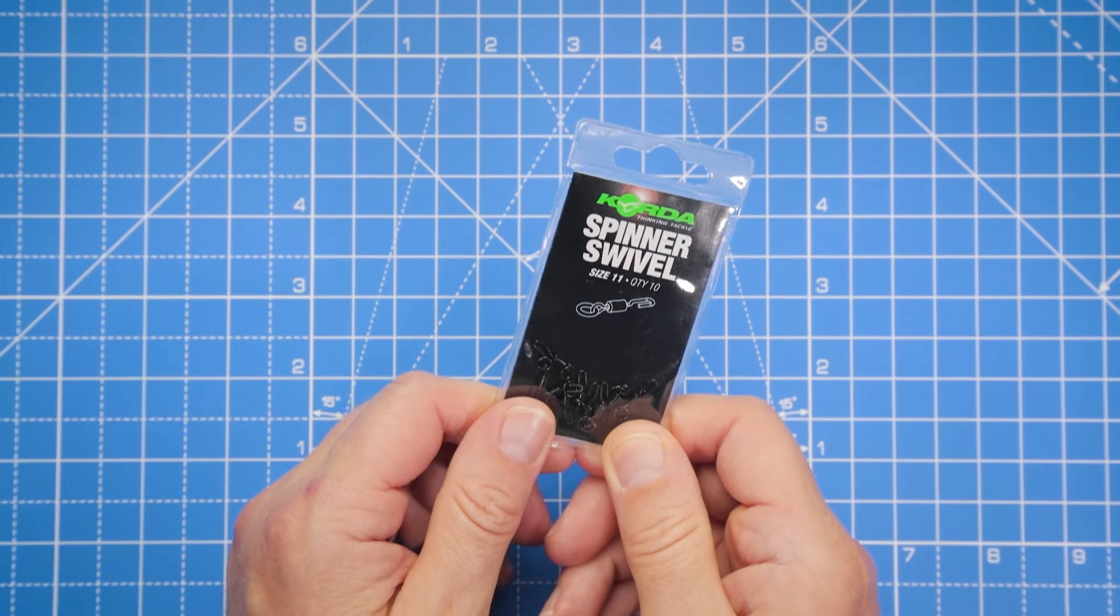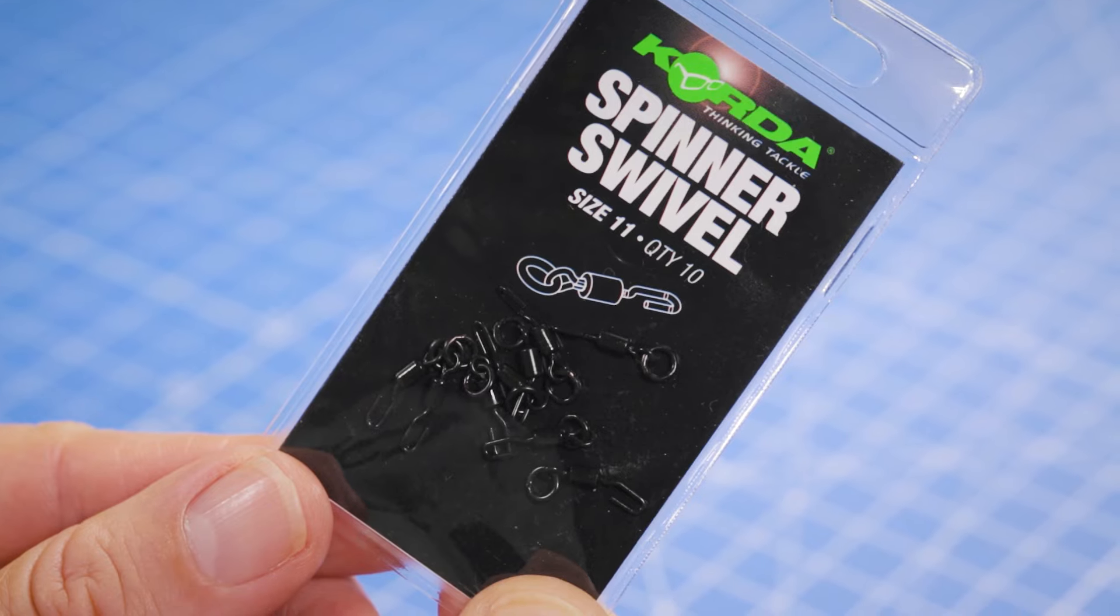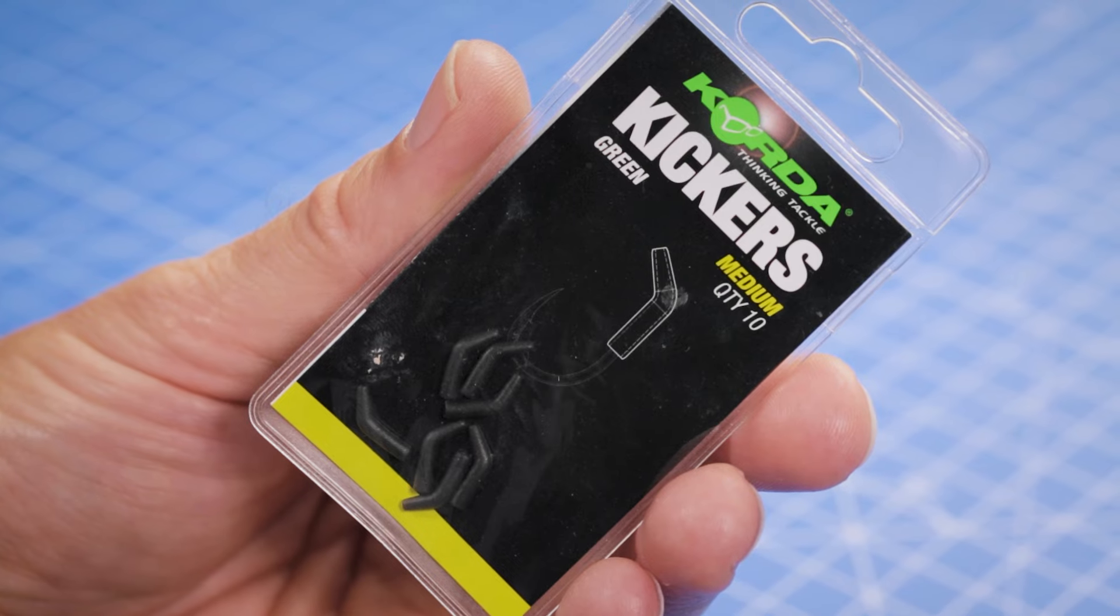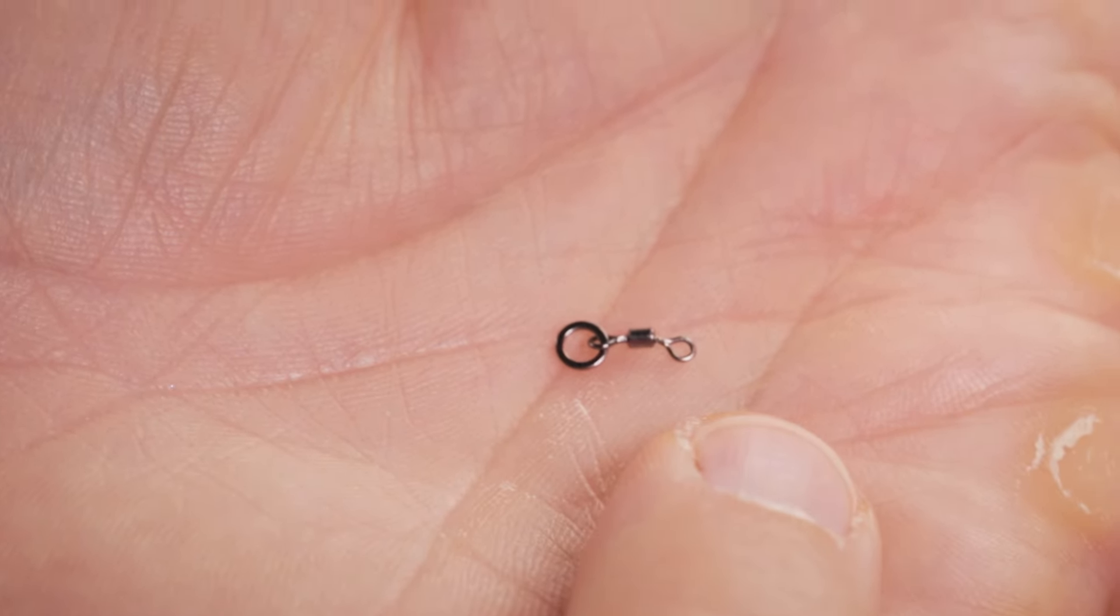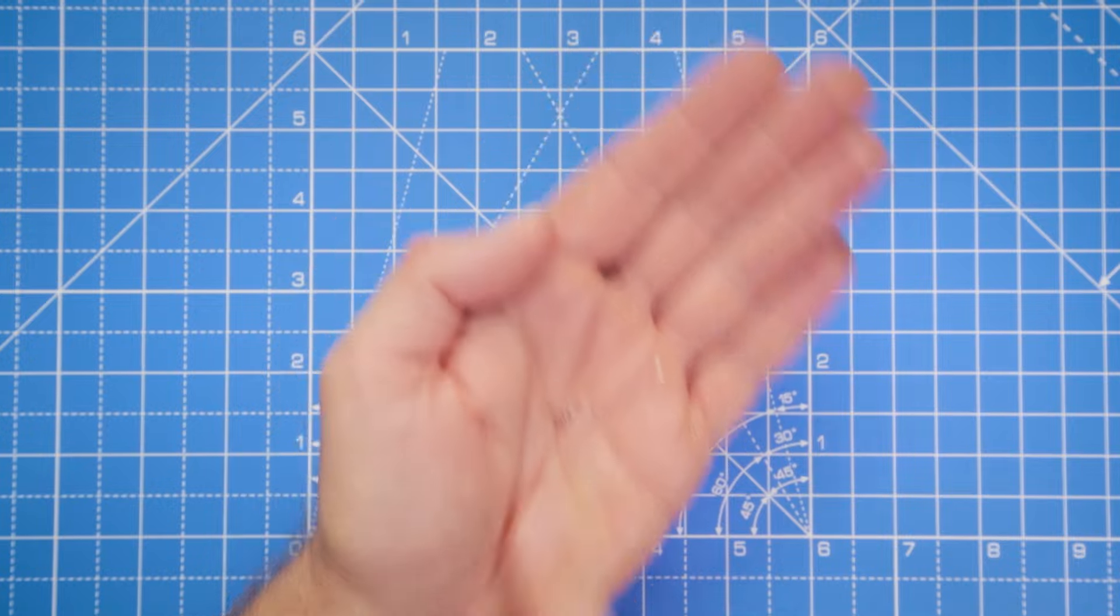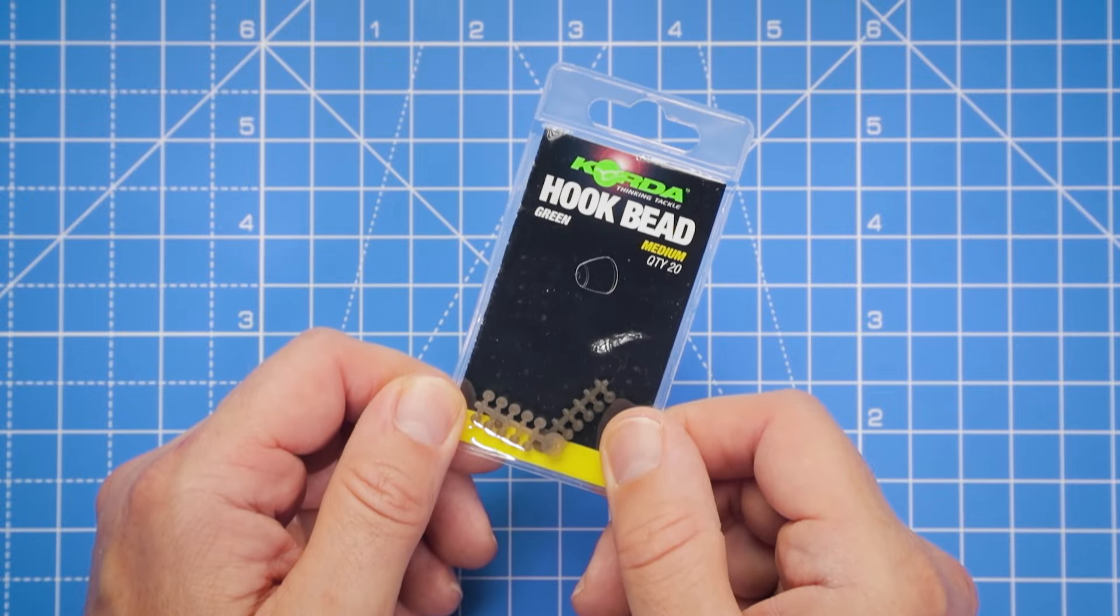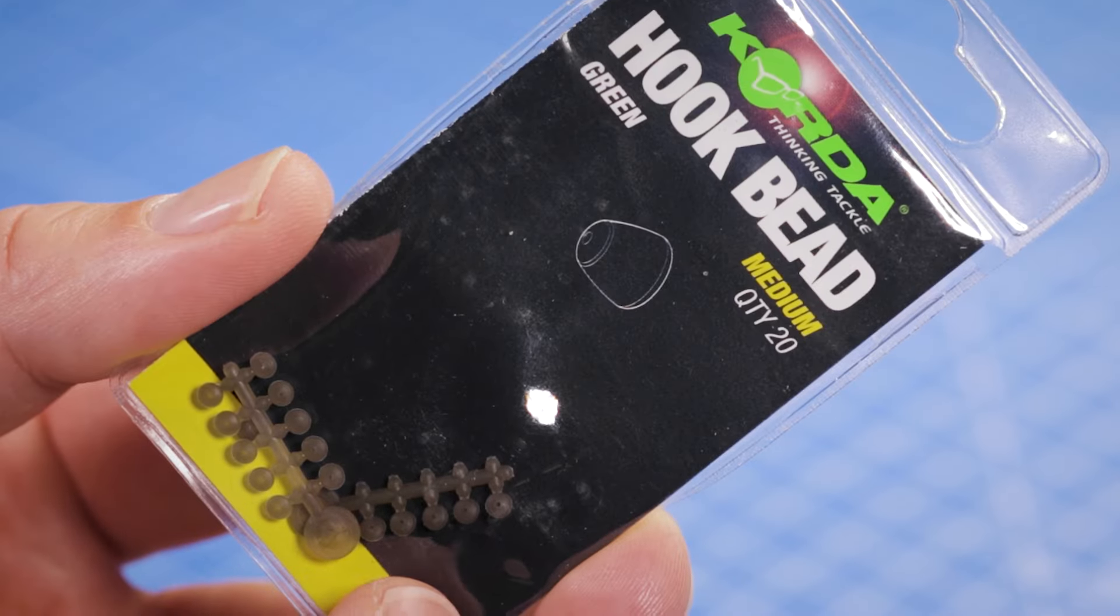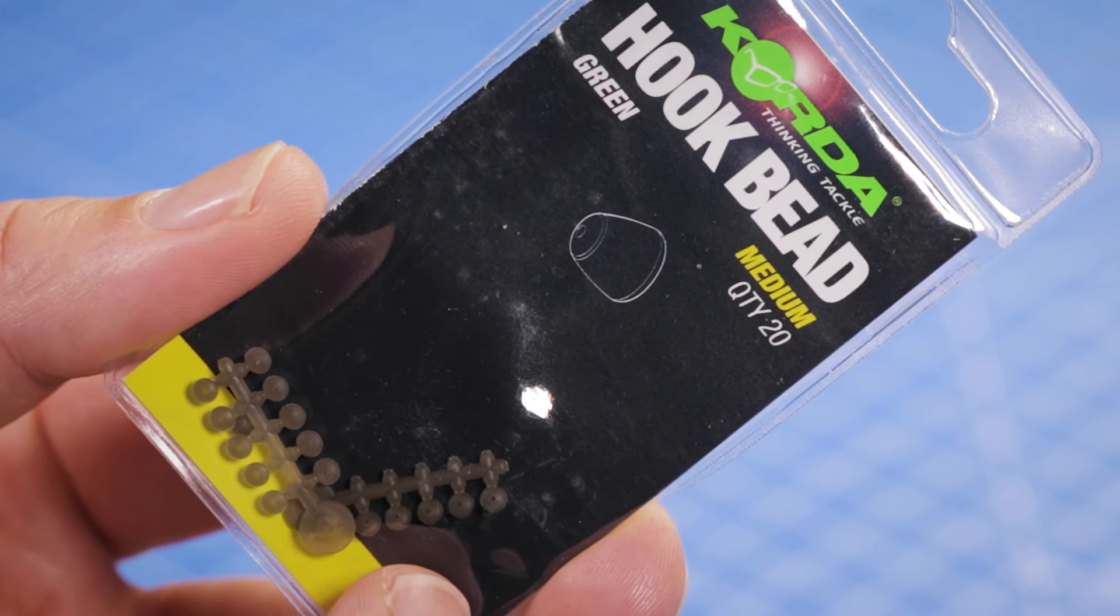A couple key components to the spinner rig are the spinner swivel and a kicker, which both make building the rig a lot easier to do. For attaching the hook bait and giving it more freedom of movement, we're going to use a micro ring swivel. To place the micro swivel and hook bait in the perfect position on the hook shank, we're going to use a small hook bead.